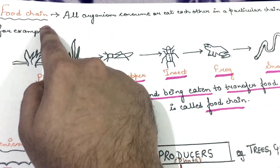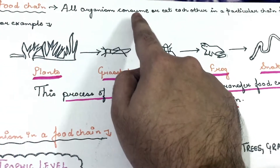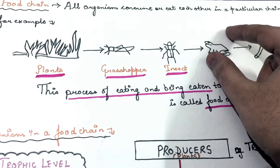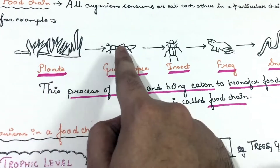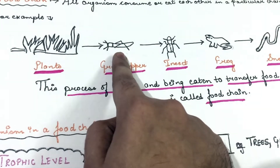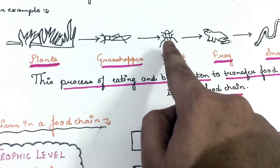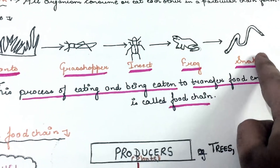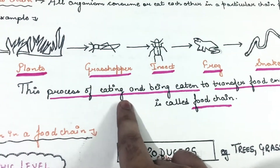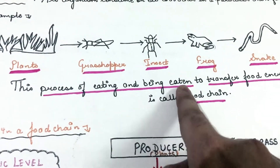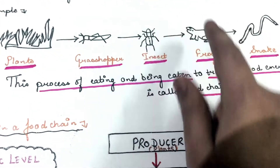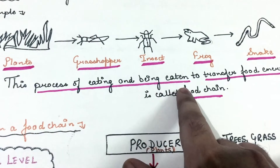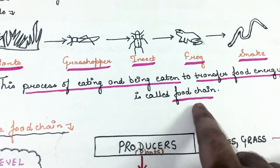What is a food chain? All organisms consume each other in a particular chain form. For example, plants are eaten up by grasshoppers, grasshoppers are eaten up by insects, insects are eaten up by frogs, and frogs are eaten up by snakes. This process of eating and being eaten to transfer energy is called a food chain.